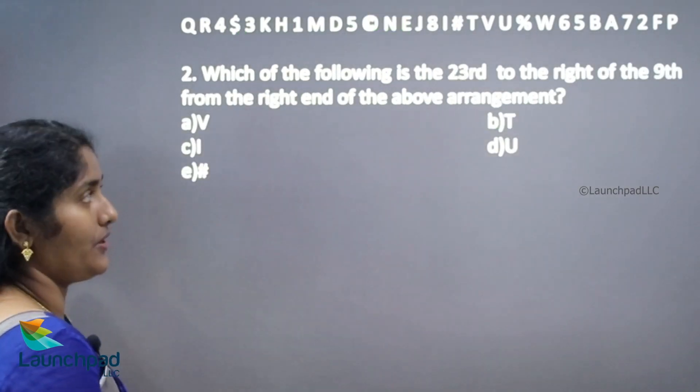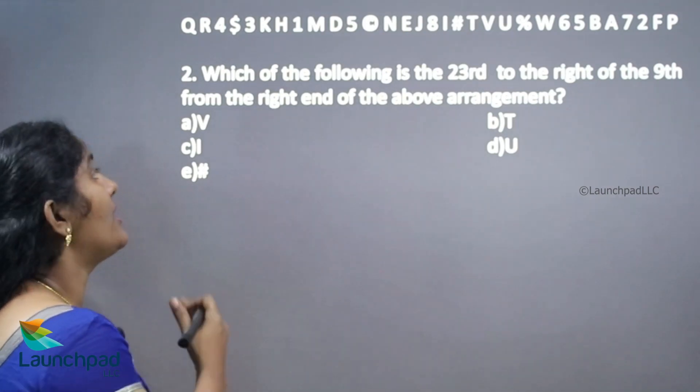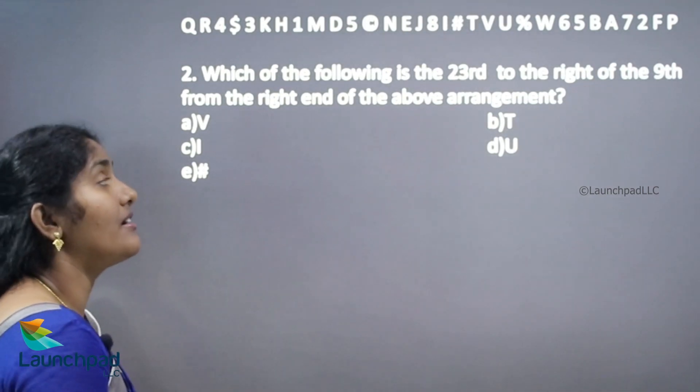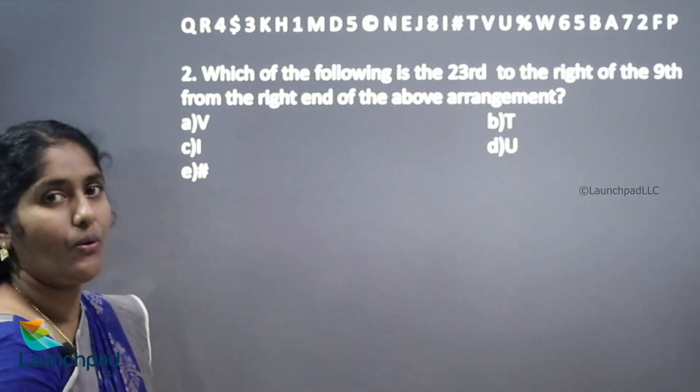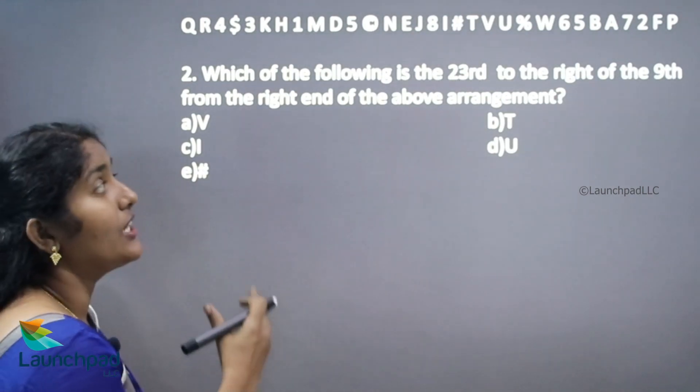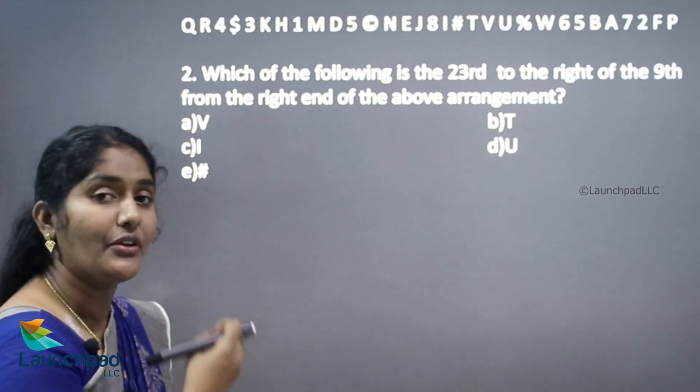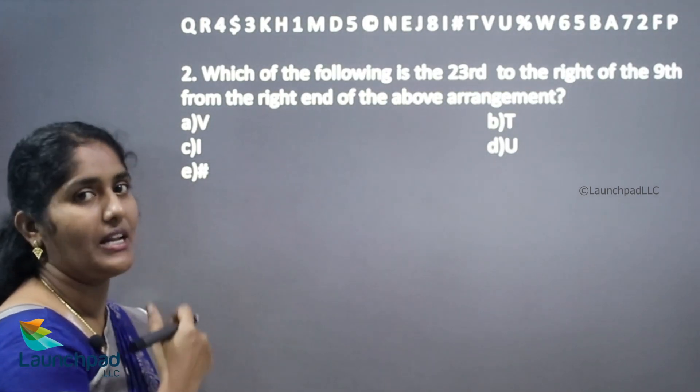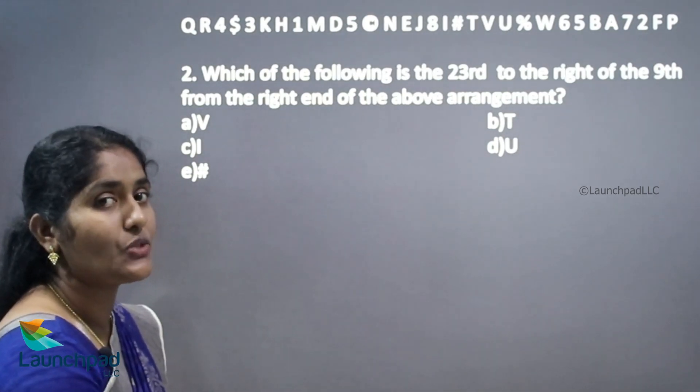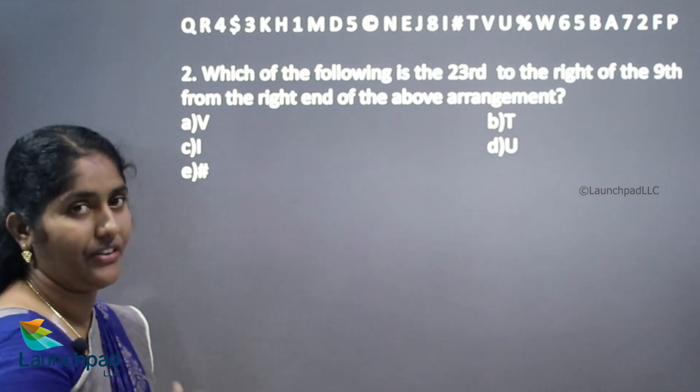Which of the following is the 23rd to the right of the 9th from the right end of the above arrangement? In this arrangement, we need to take 23rd to the right of the 9th element from the right end. The directions are same direction. Same direction means what we can do? We want to consider only the difference.